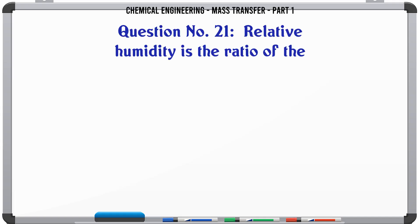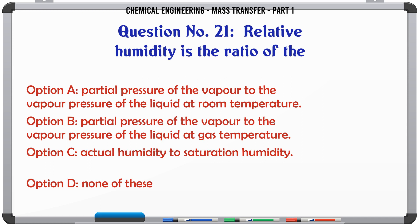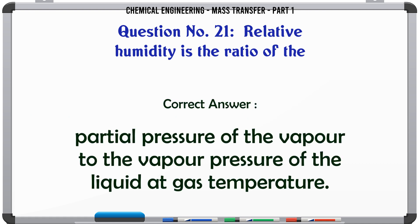Relative humidity is the ratio of the: A. Partial pressure of the vapor to the vapor pressure of the liquid at room temperature. B. Partial pressure of the vapor to the vapor pressure of the liquid at gas temperature. C. Actual humidity to saturation humidity. D. None of these. The correct answer is partial pressure of the vapor to the vapor pressure of the liquid at gas temperature.